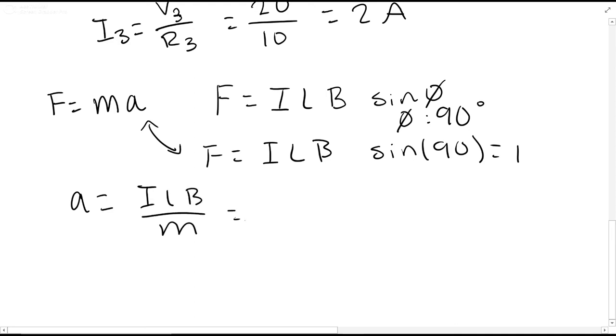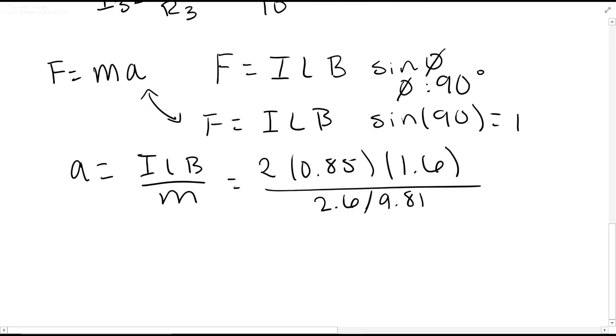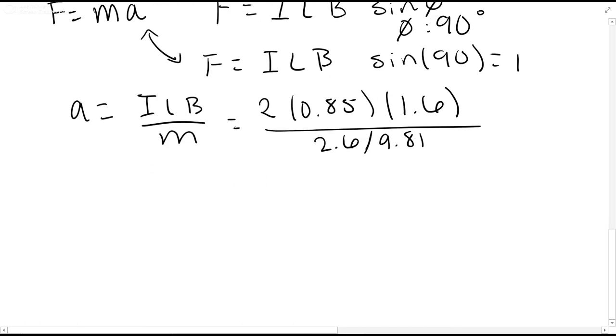We can plug in our numbers: 2 amperes of current, 0.85 meters length, 1.6 tesla magnetic field, and our mass given as 2.6 newtons. To find mass, divide by 9.81 for acceleration due to gravity, then solve for acceleration to get 10.25 meters per second squared.